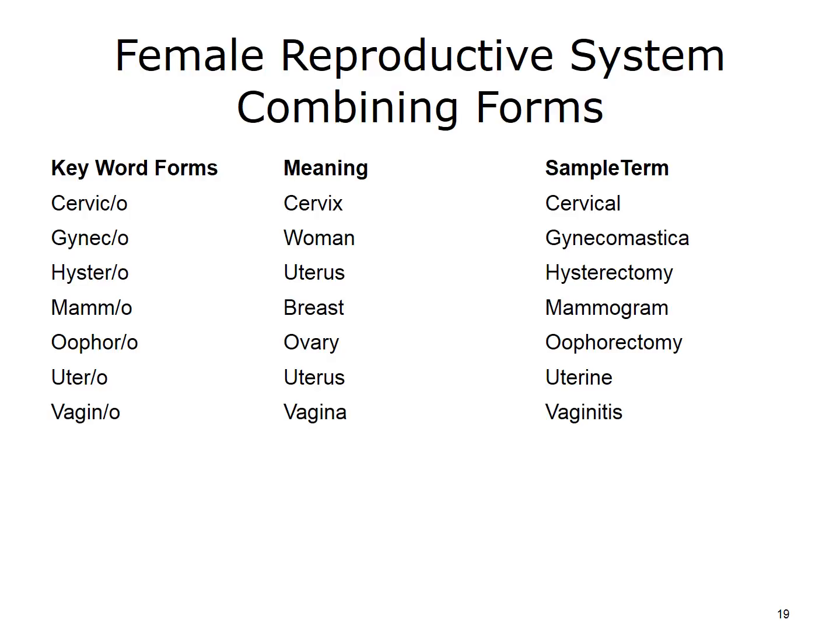Here are some key word parts related to the female reproductive system, along with their meanings. In the third column, you can see some of the medical terms created by combining word parts. You should return to the online medical dictionary to hear the pronunciation and become familiar with the meaning of the created terms.